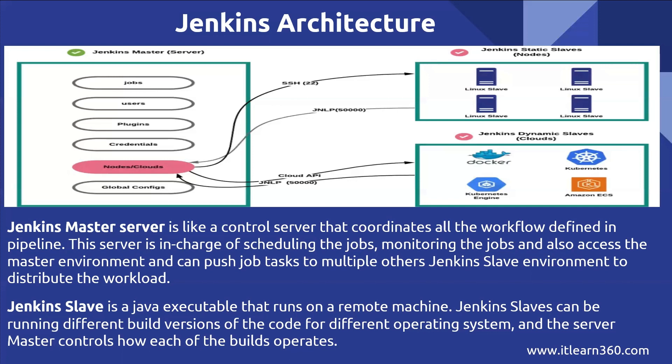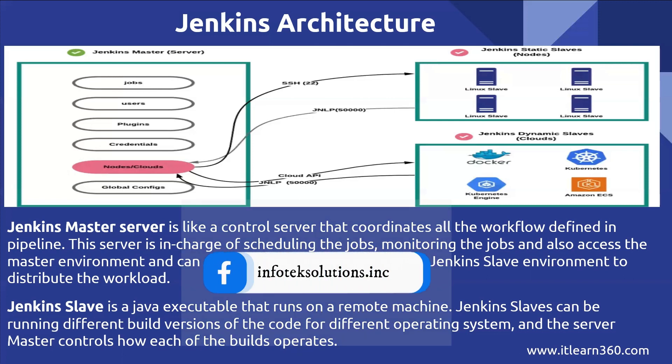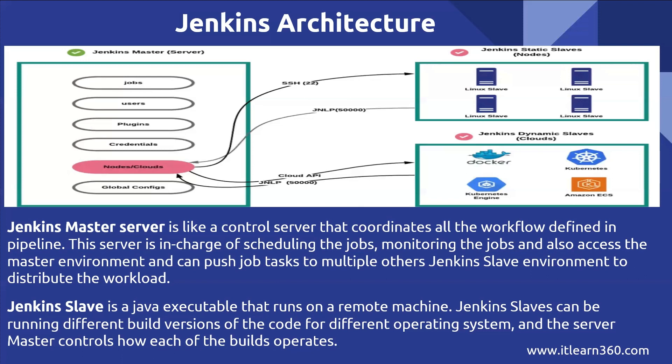A Jenkins slave is a Java executable that runs on multiple machines. Jenkins slaves can run different build versions of code for different operating systems, and the master server controls how each build operates. There are different build processes and each build process is controlled by these nodes. The master server releases the builds and based on those builds the different nodes execute according to the tasks assigned.